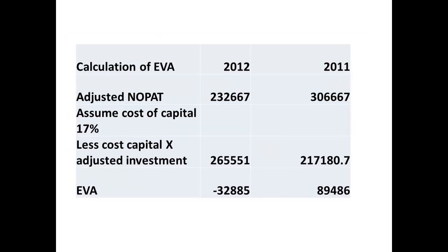The final step is to carry out the calculation for economic value added. We have figures for adjusted NOPAT. If we assume a figure of 17% for the cost of capital, then we multiply the figures for adjusted investment by 0.17. We then subtract these figures from the adjusted NOPAT to give the economic value added figures. Why have we got differences here for each year? Well, if you look, the investment was up in 2012, as shown in the balance sheet. However, it shows us that income did not rise sufficiently.